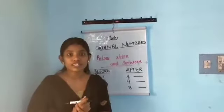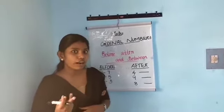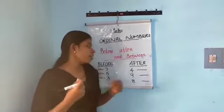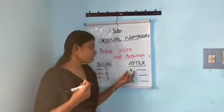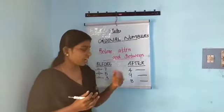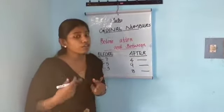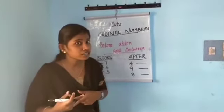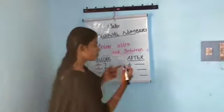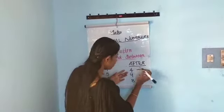Next is 'after'. After means the next number. I have written four here. What number comes after four? It is five. So we write five here.